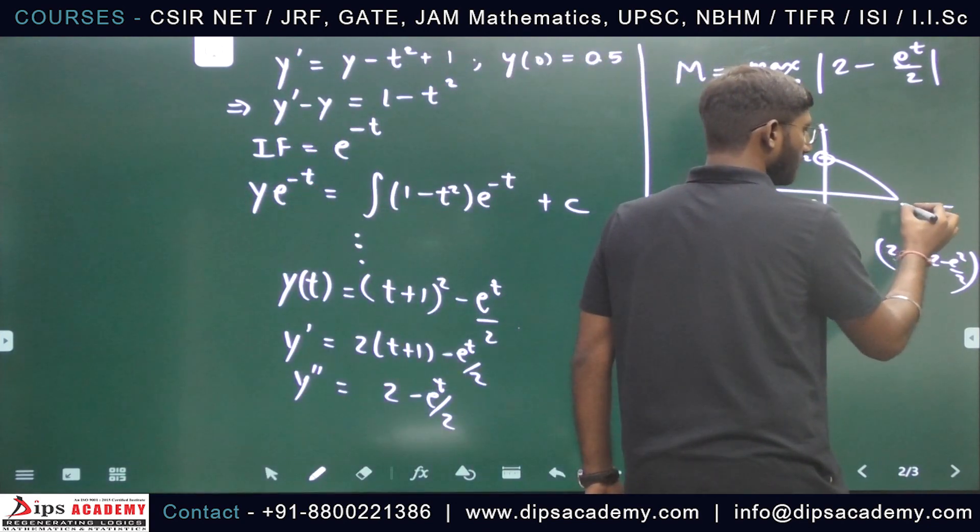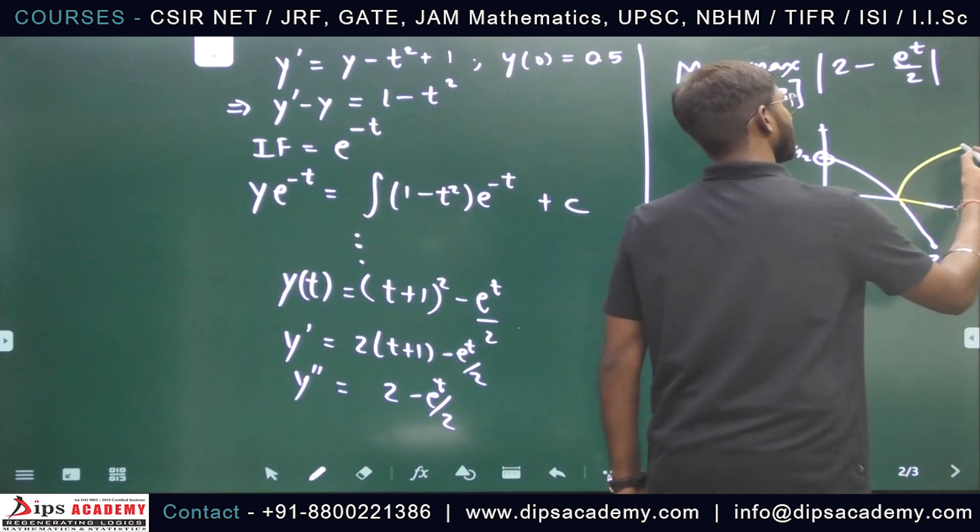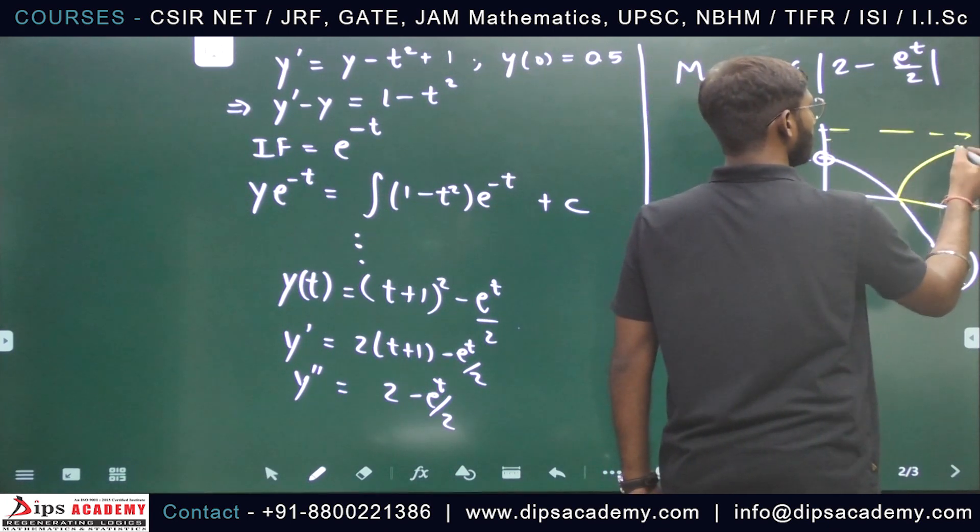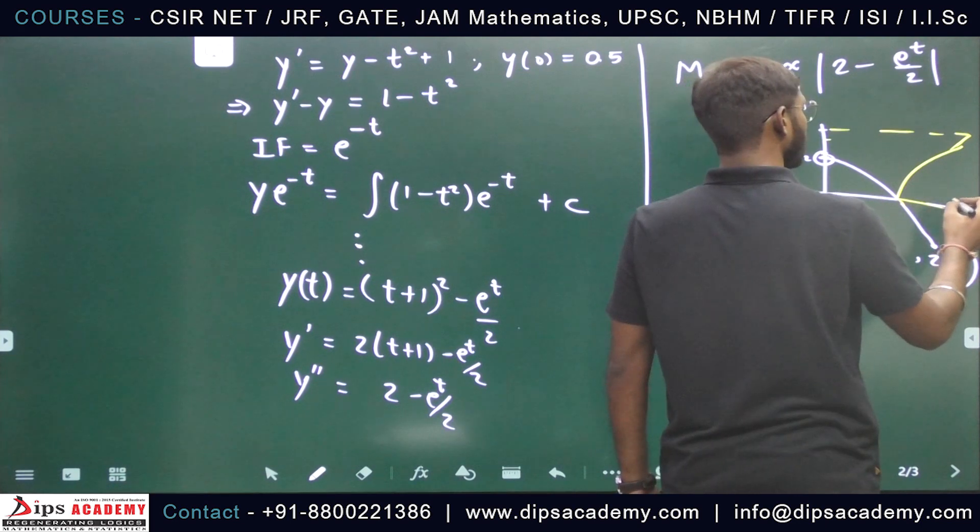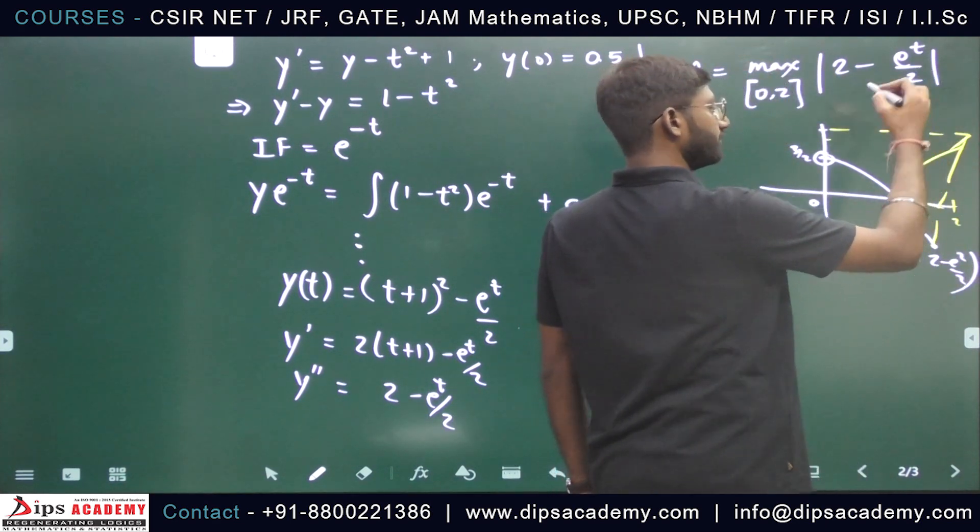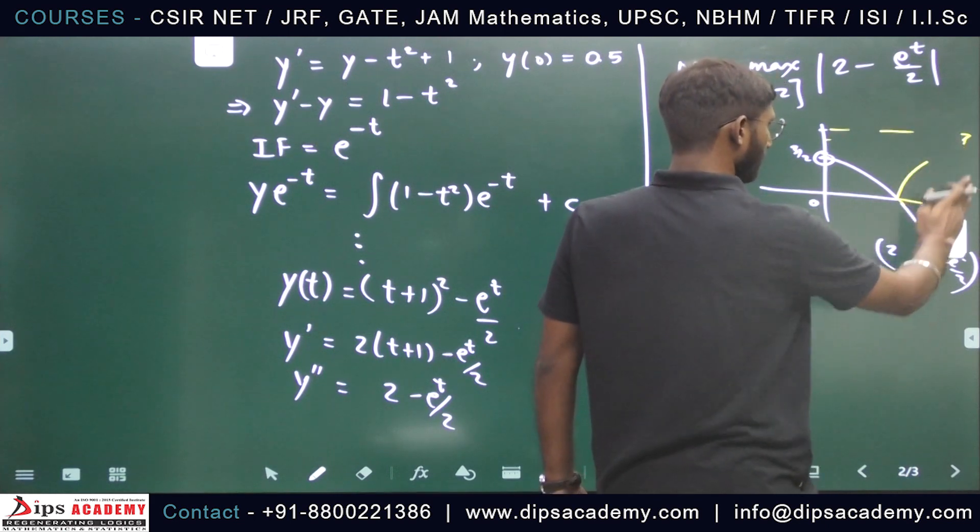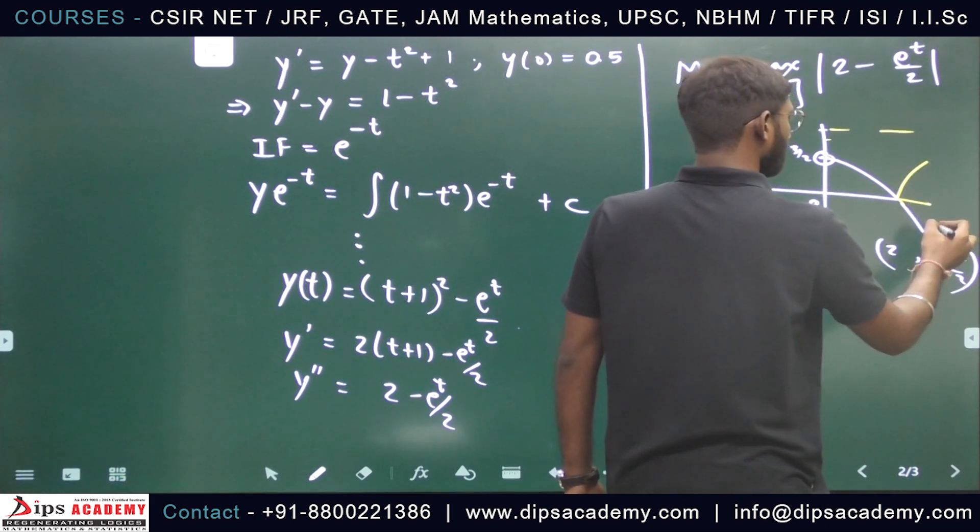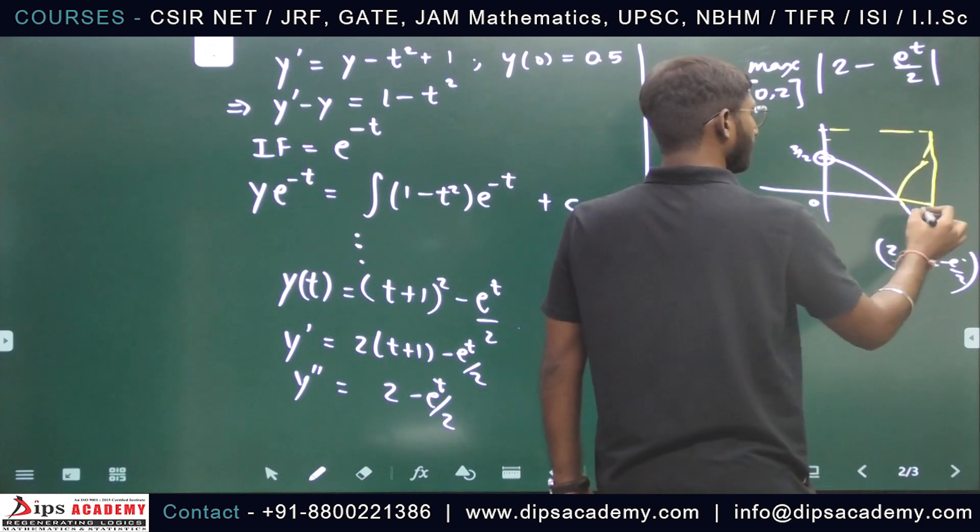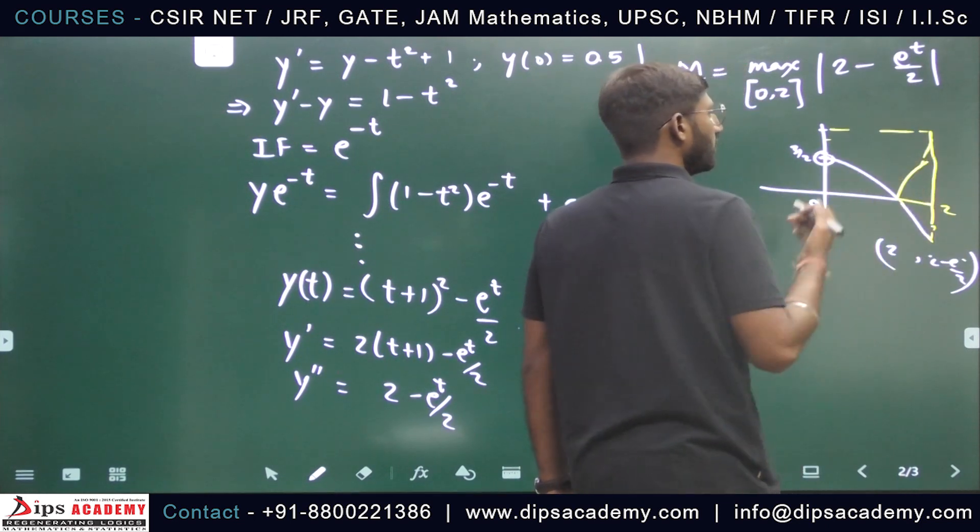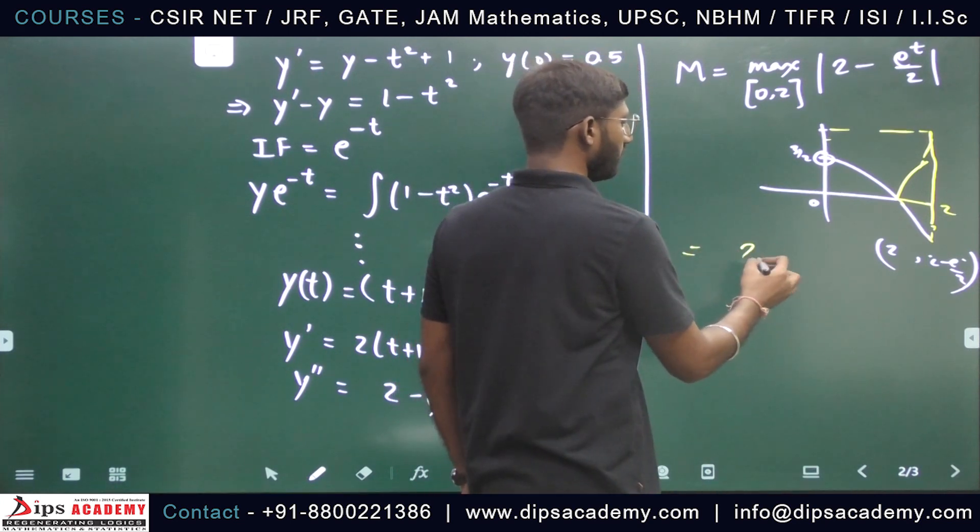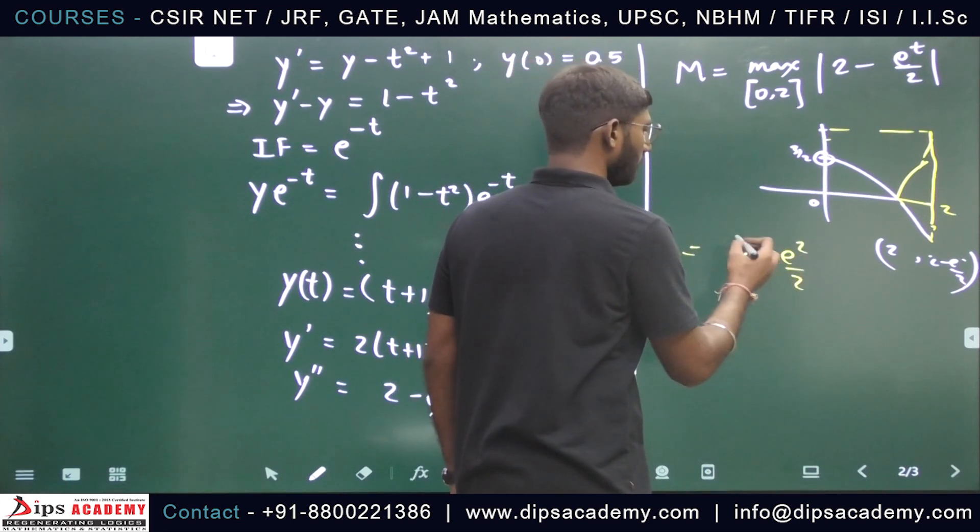So this is not a scale graph. Otherwise I hope you got the idea how this would work. Here is 2. This point is about 2. So its maximum value at point 2 will be 2 minus e squared divided by 2.